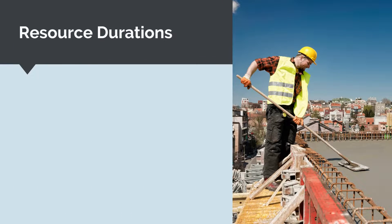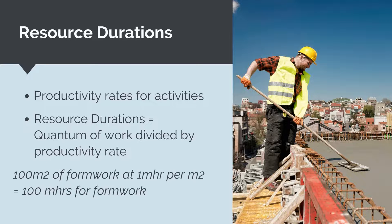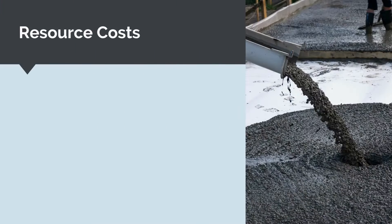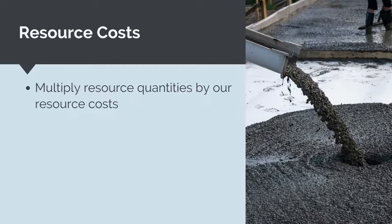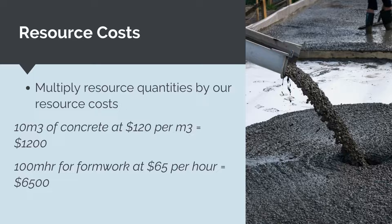Next, now we know what activities we need to complete and what resources we need to complete them, we need to estimate the duration we need these resources based on productivity rates. Our resource duration will then be the quantum of work from our bill of quantities divided by our productivity rate. For example, if we need to complete 100 meters squared of formwork at an average productivity rate of 1 meter hour per meter squared, then we need 100 meter hours for formwork. Then once we've worked out our resource quantities, all we need to do is multiply these quantities by our resource rates. If we need 10 meters cubed of concrete, then we multiply this by our resource rate of $120 per meter cubed to get a total cost of $1,200 for concrete materials. If we need 100 man hours for formwork at $65 per man hour, then our cost is $6,500 for formwork labor. We can then simply sum all these together to get our total activity costs.